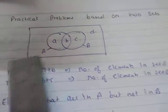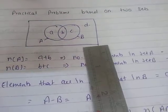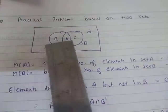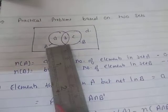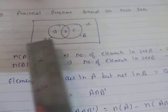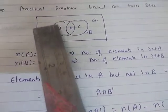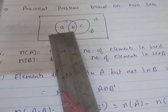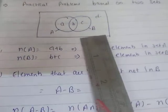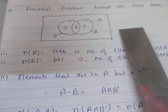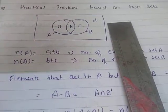The rectangle represents the universal set, and two sets A and B are there. I have specified the elements as small a, small b, small c, and small d. Small b is the intersection of A and B, that is n(A∩B). n(A) is the whole circle A, which contains elements a and b; set B contains elements b and c; and d is neither in A nor in B.